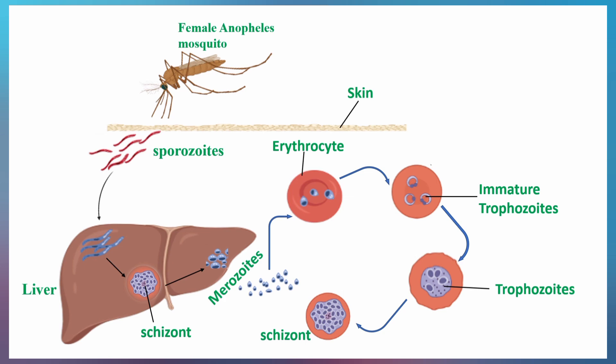Some of the immature trophozoites, instead of developing into the mature forms, undergo sexual reproduction to produce male and female gametocytes once again. These gametocytes are then ready to be picked up by another mosquito to sustain and initiate the sporogonic phase in the mosquito once again.